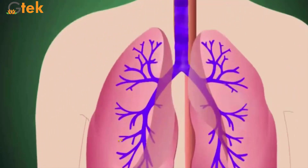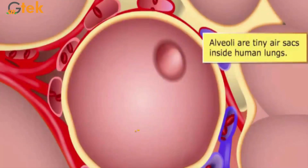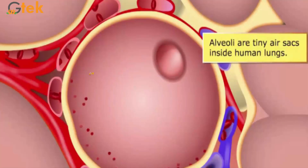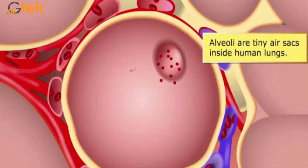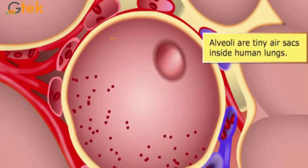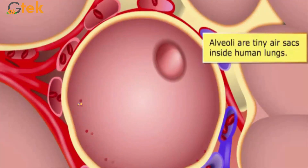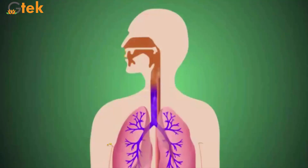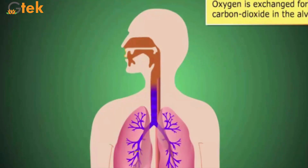While we are breathing, the alveoli are the tiny air sacs inside the human lungs. You can see how the alveoli are situated inside the human lungs. This is called the lungs, and while we are breathing, the oxygen is exchanged for carbon dioxide in the alveoli.